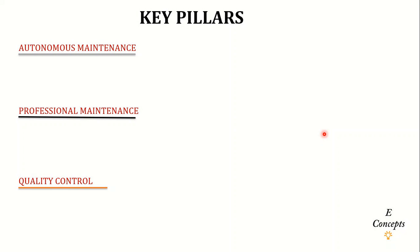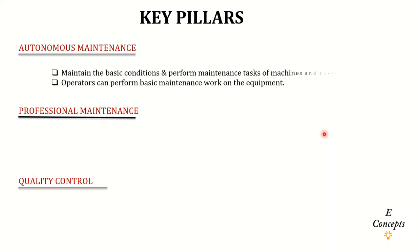The fourth pillar is Autonomous Maintenance, a concept from Total Productive Maintenance. Workers perform basic maintenance on equipment and coordinate with the maintenance team so that equipment operates more efficiently.